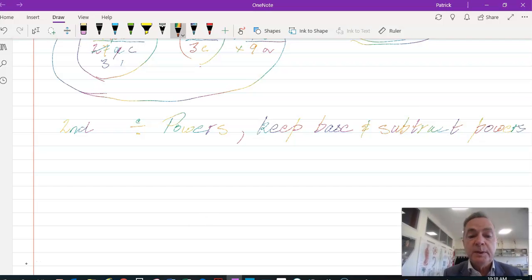An example of that would be 3a to the 7th over 6a to the 5th. The 3 will go into itself once and into 6 twice. a will go into a, so that becomes a to the 7 minus 5. What I'm left with is a to the power of 2, or a squared. So I've got 1 over 2, or half, a squared.